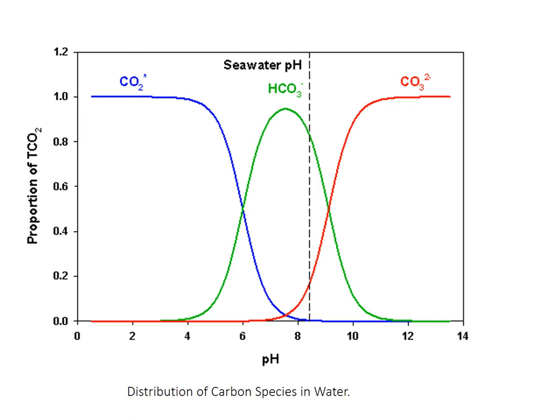But if you lower the pH through any of these processes — respiration or precipitating carbonates — you change the relative proportions of the different carbon species. You end up with more bicarbonate, and beyond about pH 8 you get much more CO2. So if you acidify the oceans, more of the carbon can exchange with the atmosphere. Ocean acidification basically reduces the ocean's capacity to keep carbon out of the atmosphere.